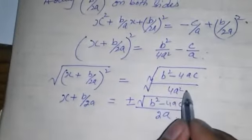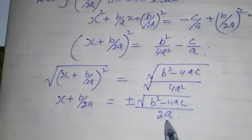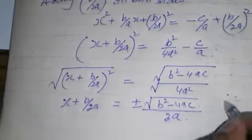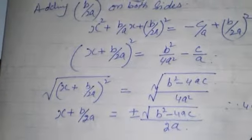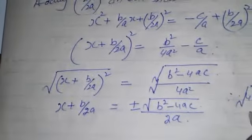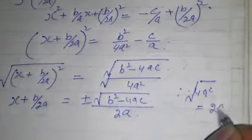When we take the square root of 4A² square, the square root is 2A.